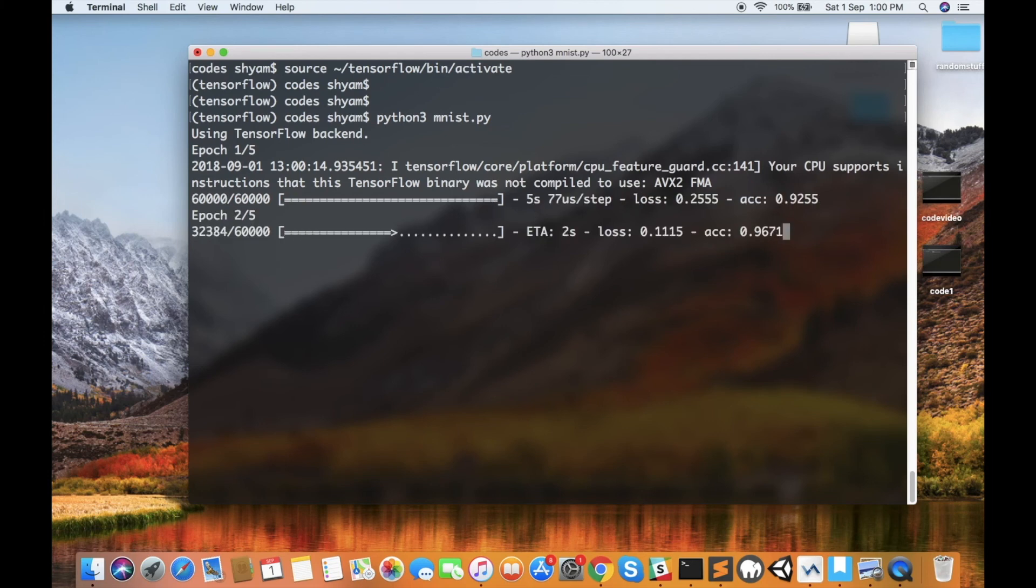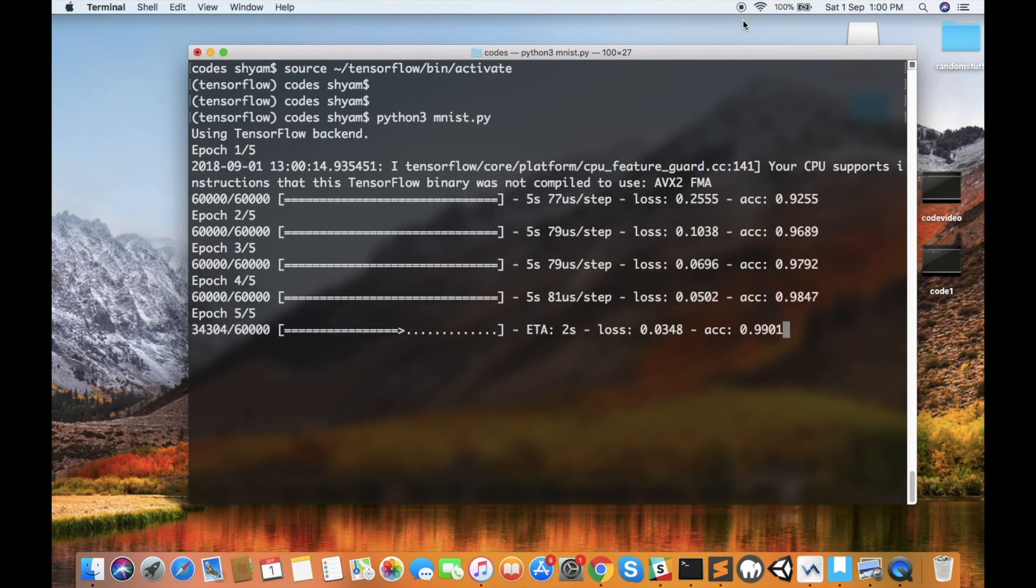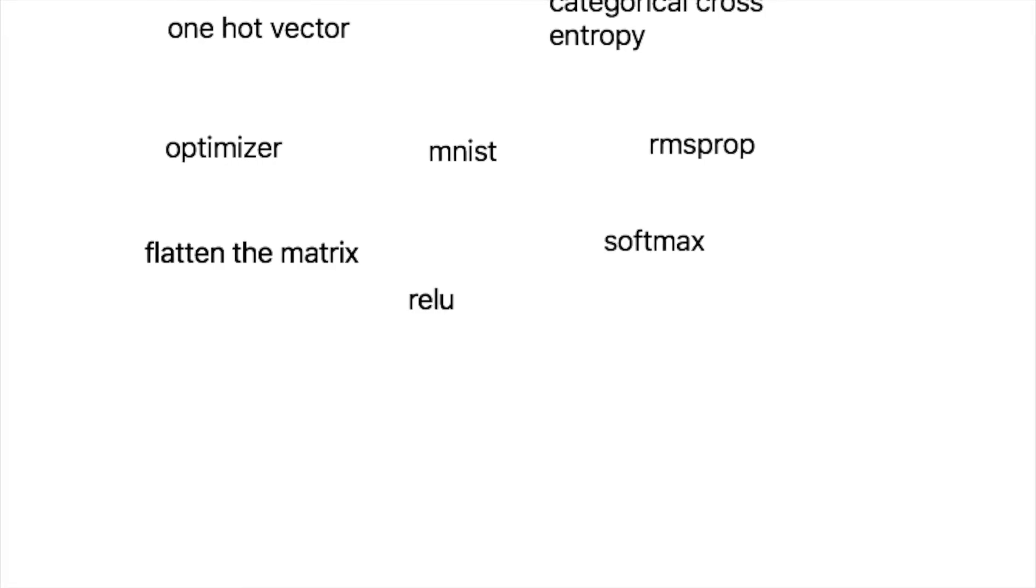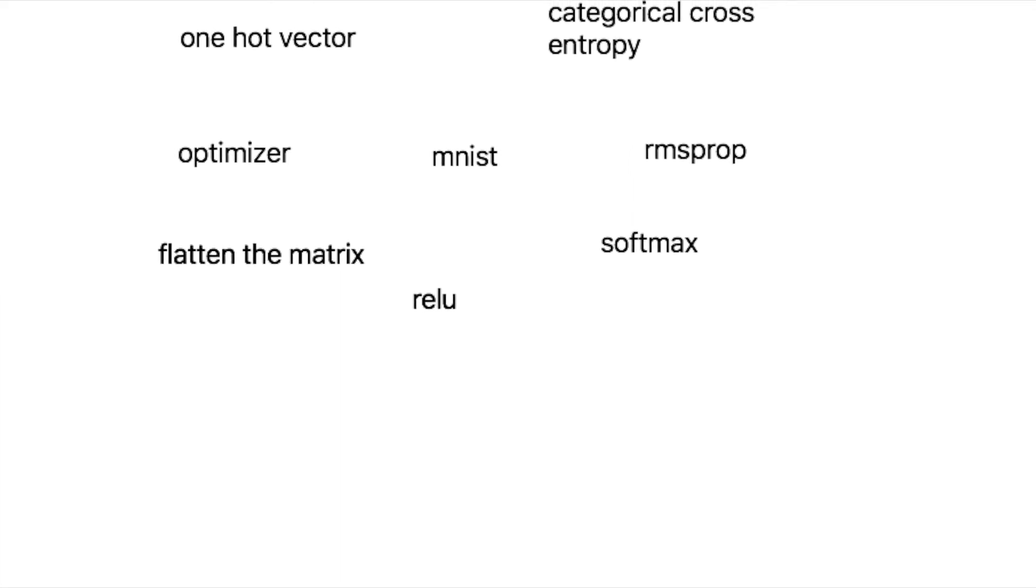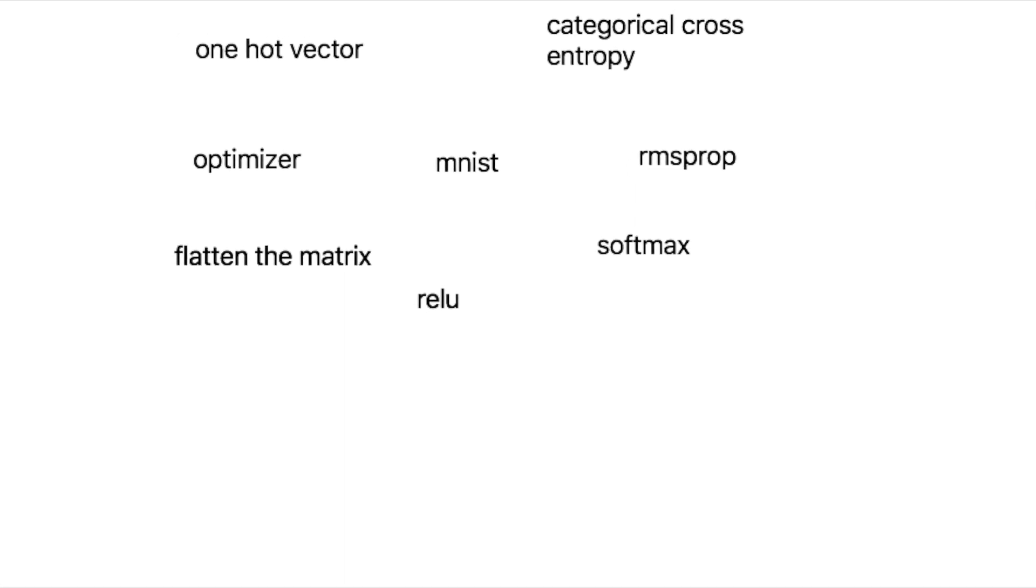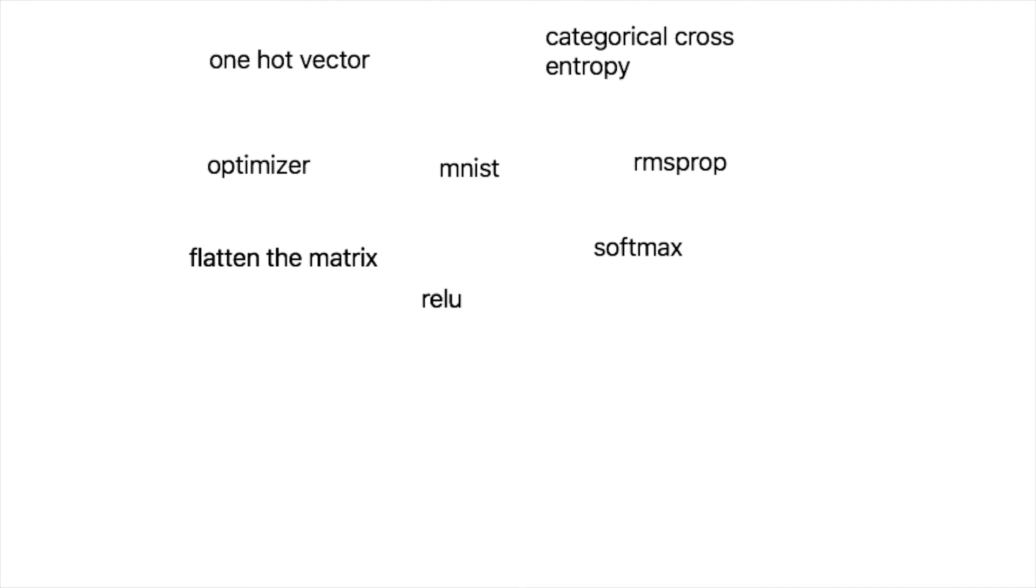You can observe that the error is slowly decreasing and the accuracy is increasing. There were many things going on in this video that you might have no clue about. We will explore those concepts in future videos. Nevertheless, you have built your image classifier.